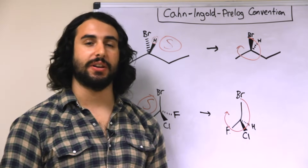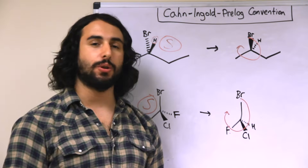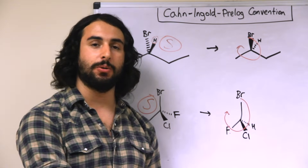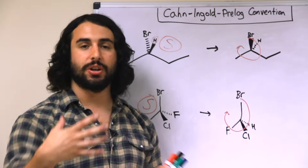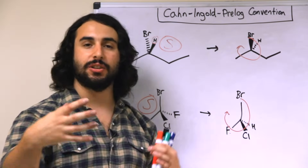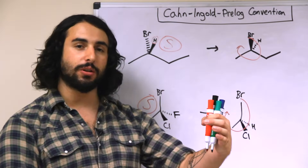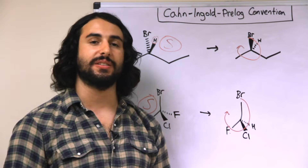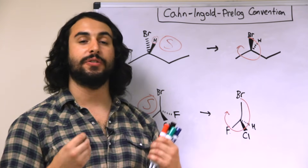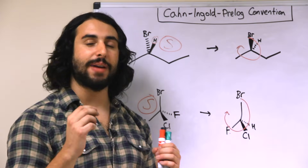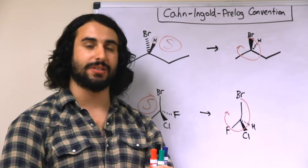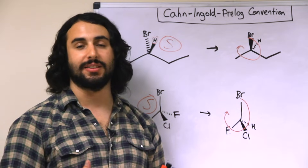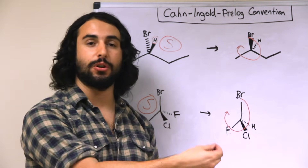When assigning absolute configuration for a chiral center where the lowest priority group is not already away from you, you have two options: you can change in your mind where you are located and how you are looking at the molecule — if you're very good with spatial reasoning — or if you are not, you can swap any two groups in that chiral center, but then you must invert your result.